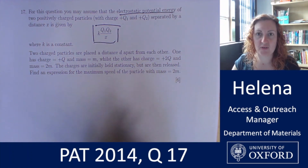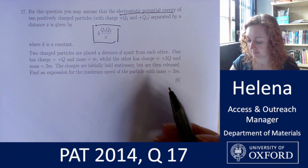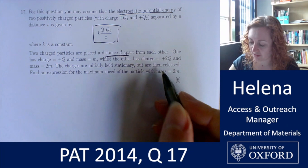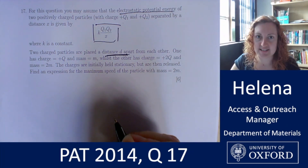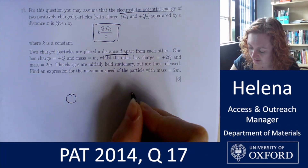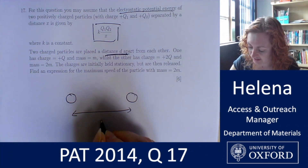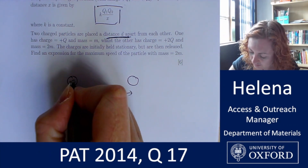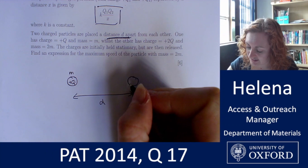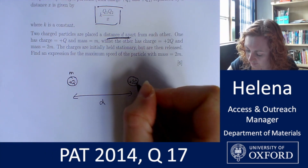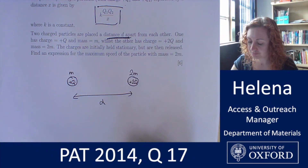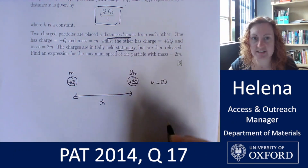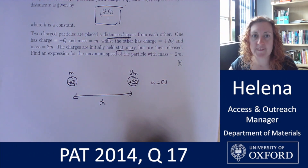Now let's have a look at the scenario we're presented with. We have two charged particles placed a distance d apart from each other. Let's start drawing this as a little diagram as we go. One has charge plus q and a mass m, and the second has a charge plus 2q and a mass 2m. The charges are initially held stationary, so our initial speeds are zero for both, but then they are released.